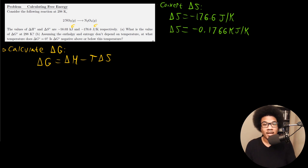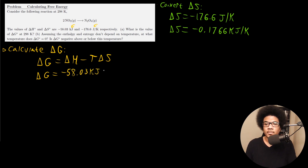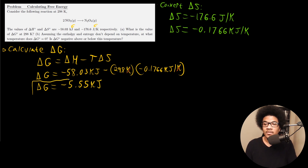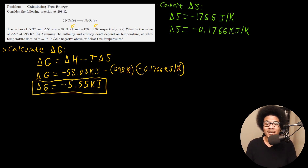Now we can plug in and solve. ΔG equals ΔH (−58.03 kJ) minus the temperature (298 K) times ΔS (0.1766 kJ/K). The Kelvin units cancel, leaving kilojoules. Adding those numbers together, ΔG is equal to negative 5.55 kilojoules. Since we got a negative ΔG, this means that this process is spontaneous at 298 Kelvin.